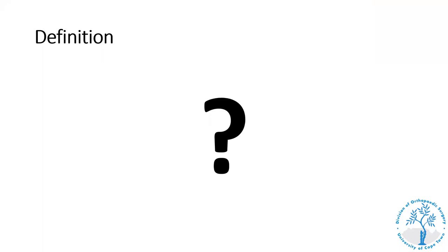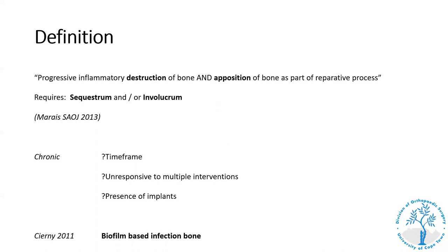One of the problems with chronic osteitis is that there's no clear definition — or there are lots of different definitions for when we can actually call something chronic osteitis. Even though we use the term chronic, there's no specific time frame attached; in some cases in the literature, six months is used. The best definition I like to use, from Len Marais's work, is that chronic osteitis is a progressive destruction of bone and apposition of new bone as a reparative process — requiring both sequestration and involucrum. Infection becomes chronic once there's a sign of host response, such as a periosteal reaction or new bone formation.